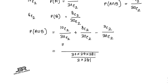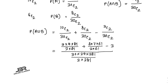Calculating P(A∪B): numerator simplifies — (10×9)/2 + (8×7)/2 − 3 over (30×29)/2. After cancellation, the final answer is 14/87.